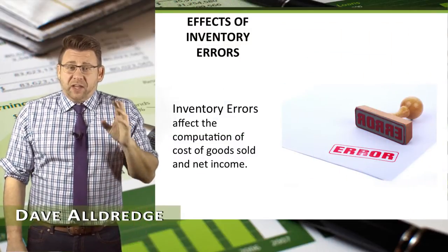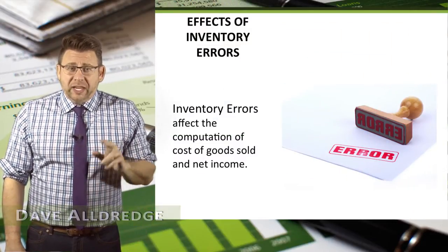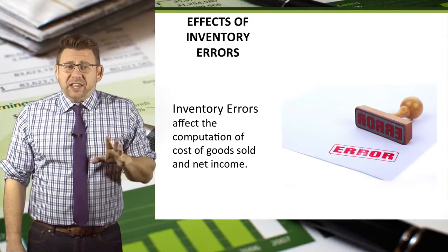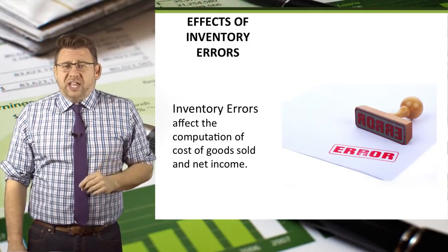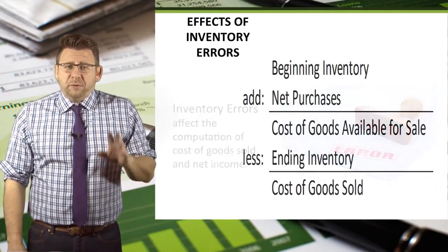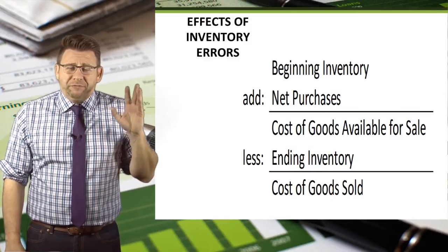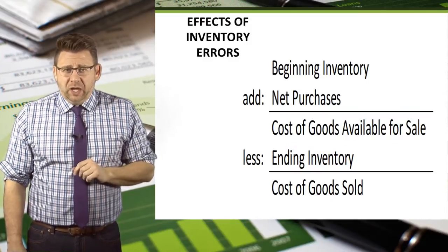Inventory errors affect the computation of cost of goods sold and net income, causing either an overstatement or understatement of net income. This is most easily observable when we review the cost of goods sold model.